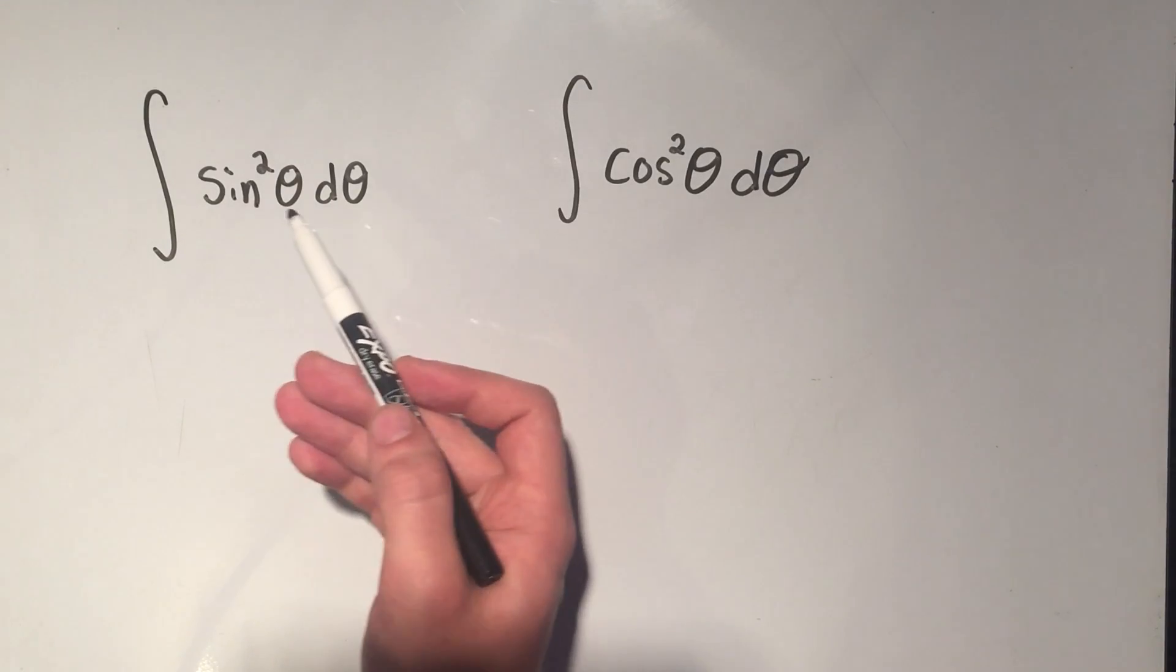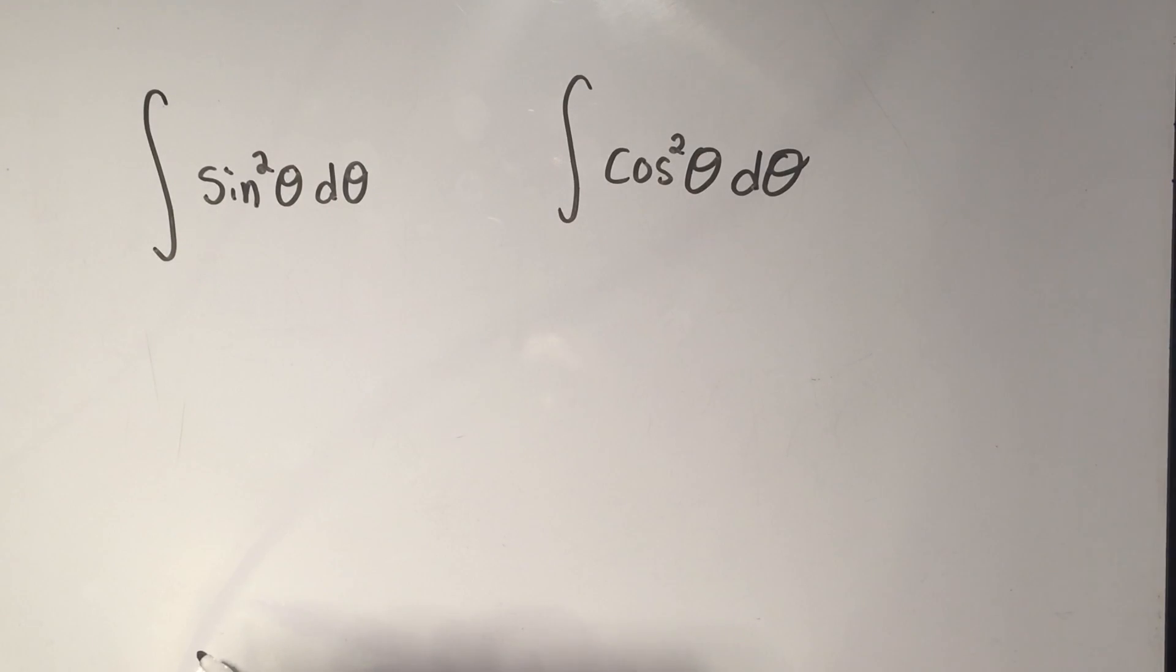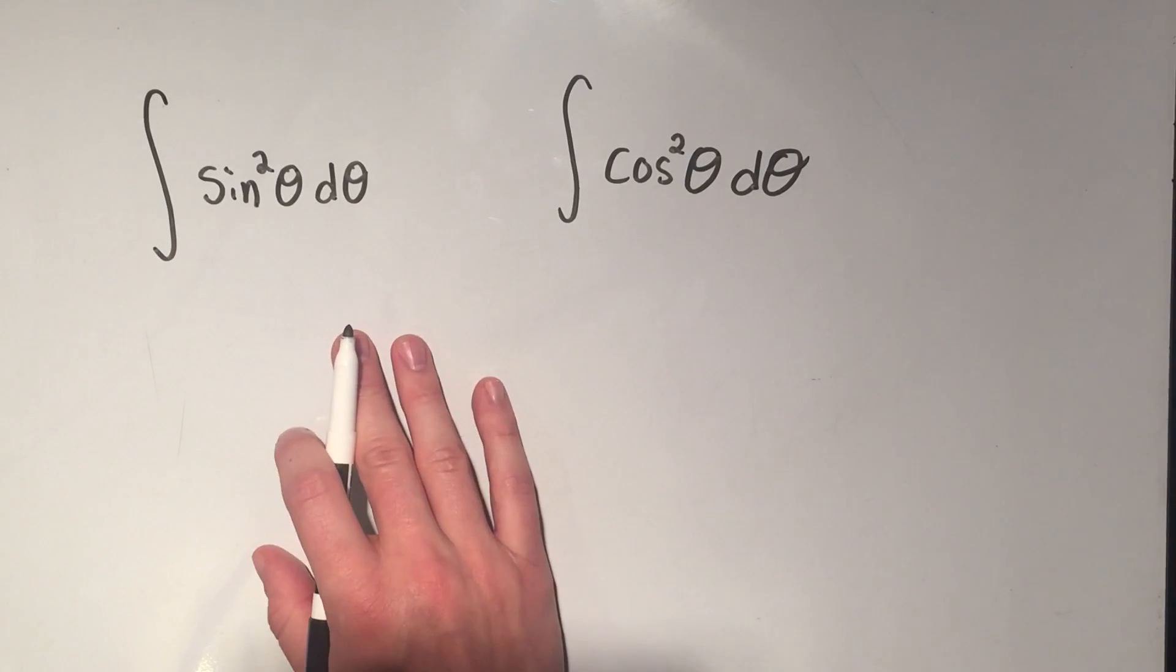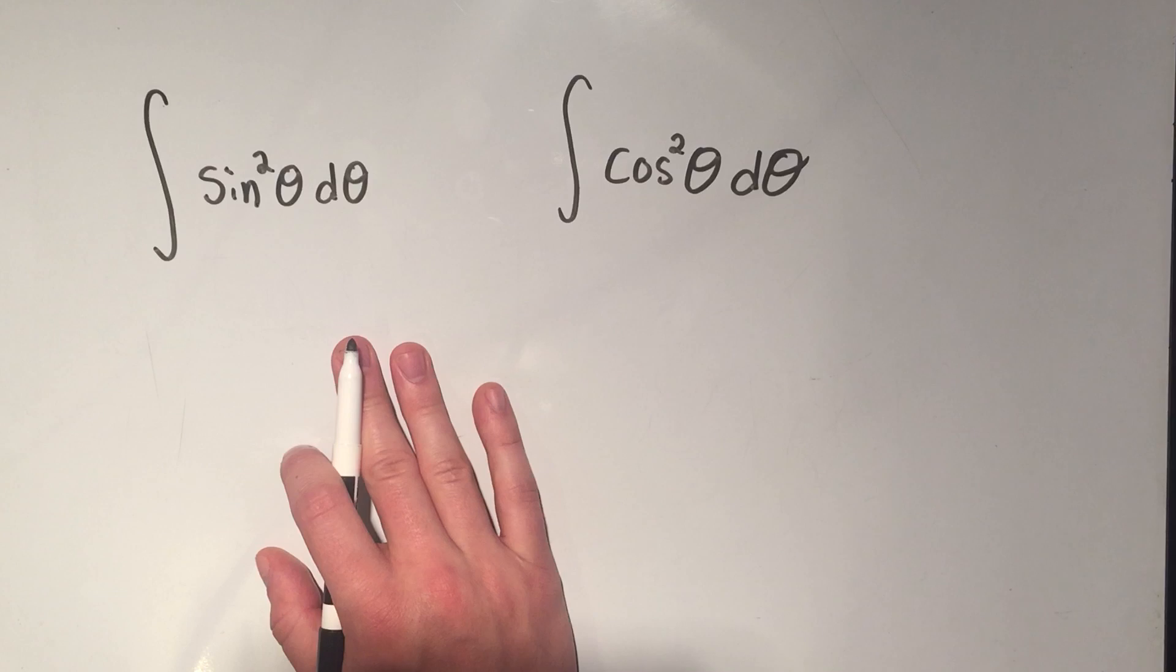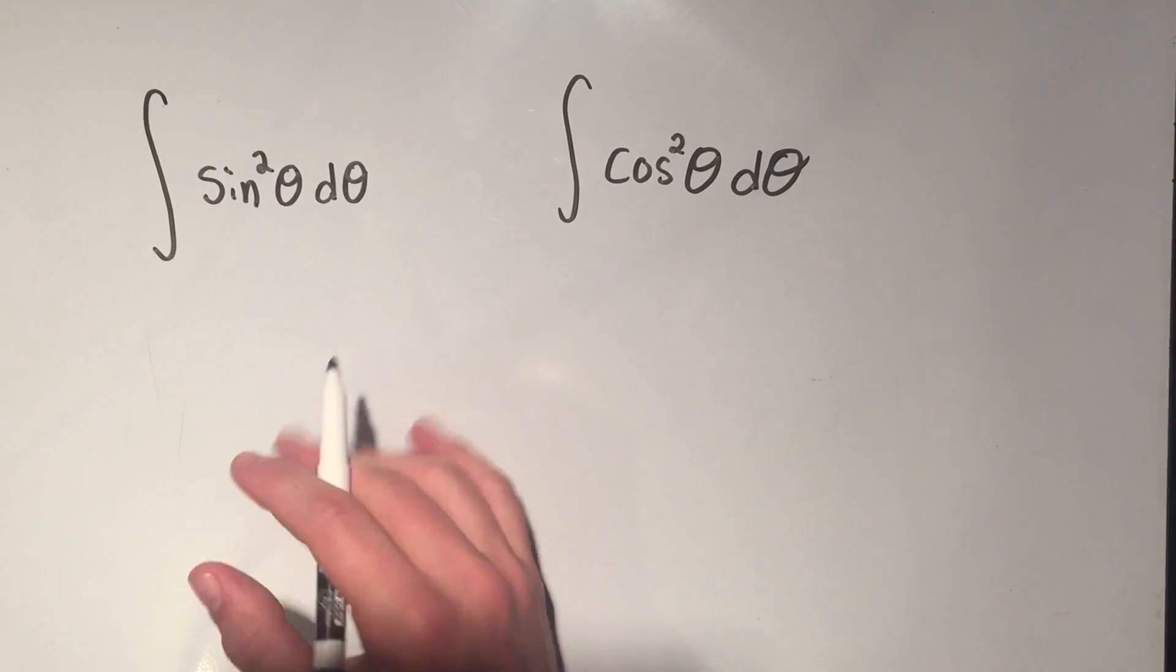The problem is you want to integrate sine squared theta d theta or cosine squared theta d theta. So the way we do this traditionally is we use the half angle identities.